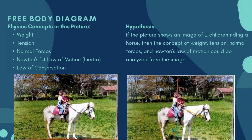In this picture, we are able to see the normal force of friction, tension, and weight. The weight will always be going down. The tension is on the rope of the horse and the arms of the child, and the normal force (Fn) is always going up.